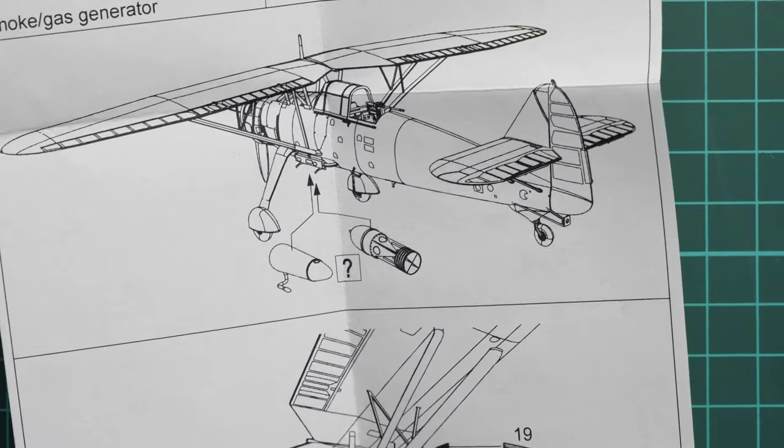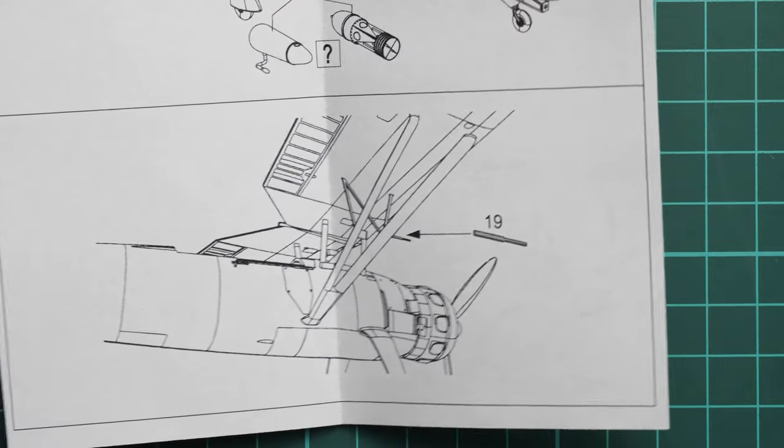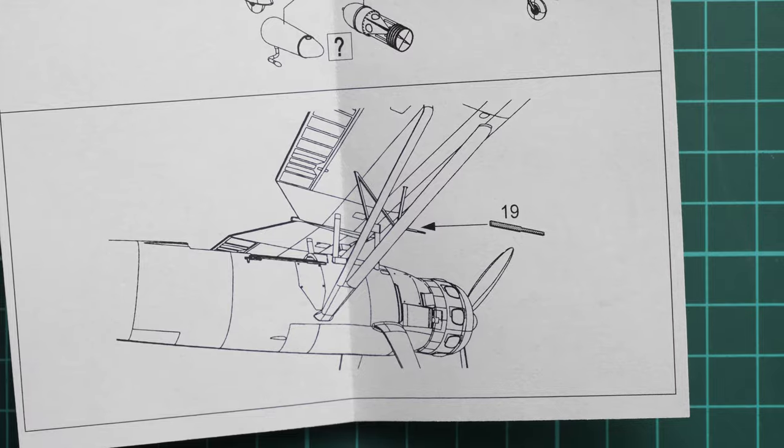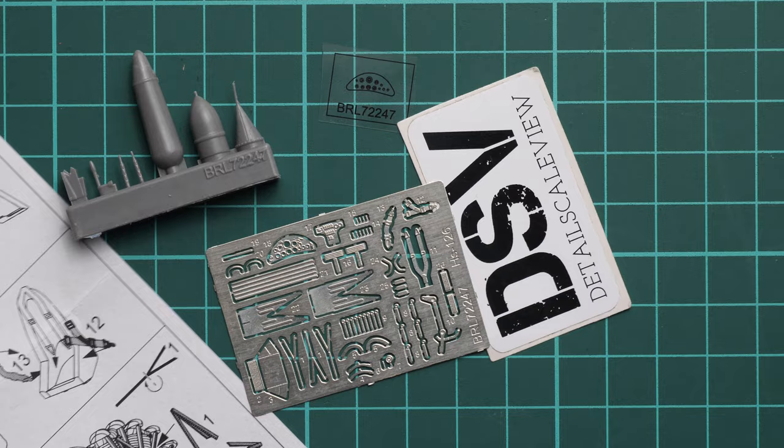Here you can see the pitot tube which will be installed on the wing strut. So quite a package for such a small kit.